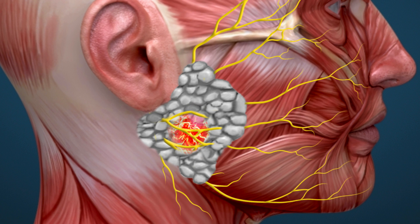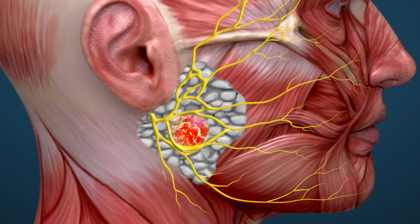When a parotid mass is removed, the surgeon cannot simply remove the growth without taking into consideration where the facial nerve branches are. The parotid mass may be below the facial nerve, or the facial nerve may even go through the parotid mass itself. Fortunately, the most common scenario is that the facial nerve branches get spread apart by the parotid mass. In order to minimize risk of accidentally cutting the facial nerve resulting in paralysis, the surgeon must first carefully identify all branches of the facial nerve around the mass using careful dissection. Afterwards, the mass can only at this point be removed safely and confidently.